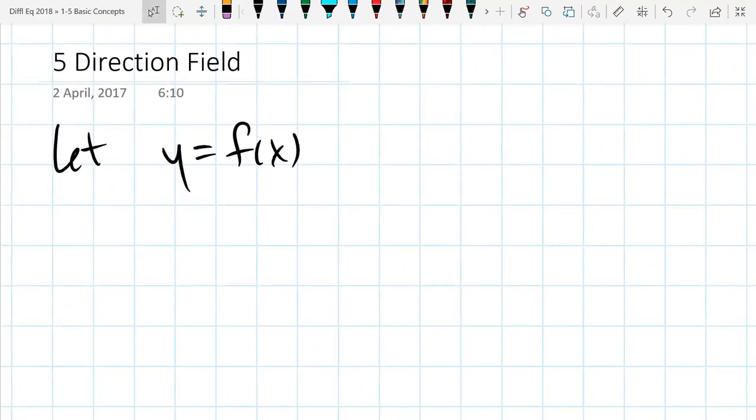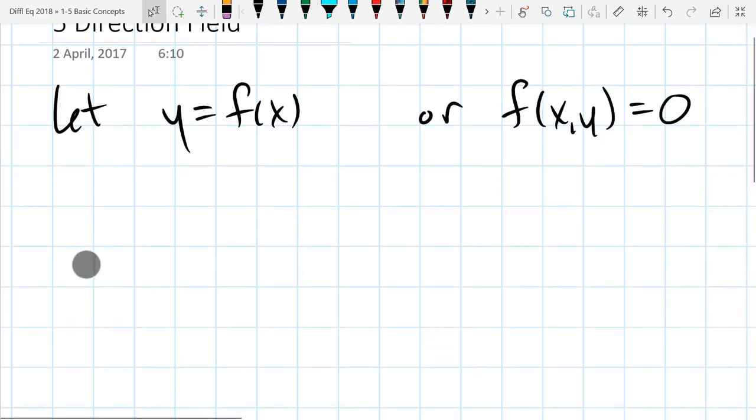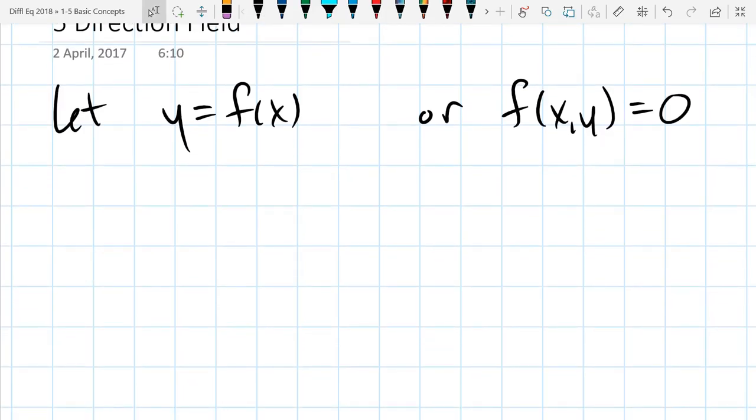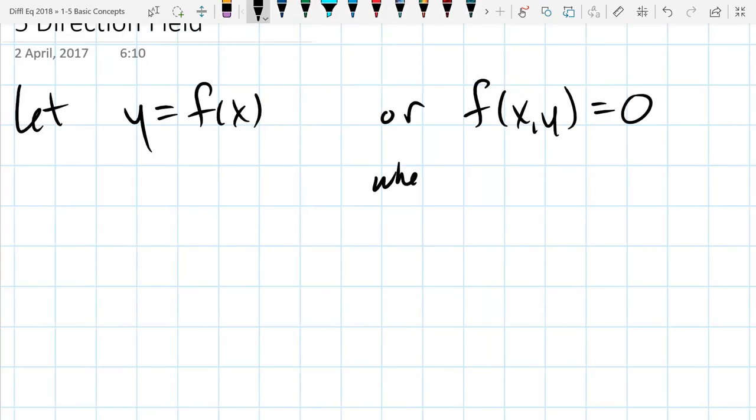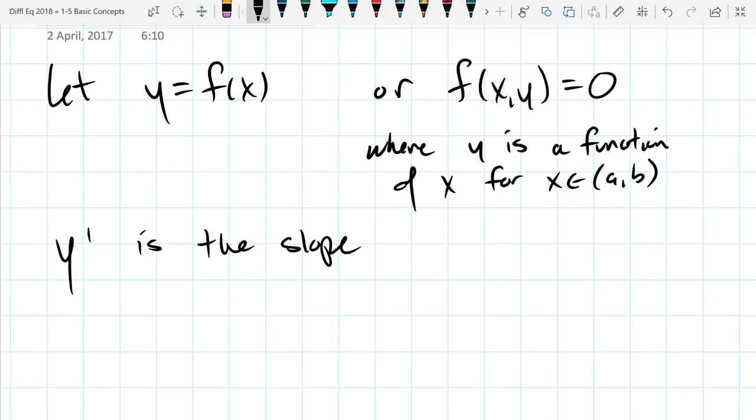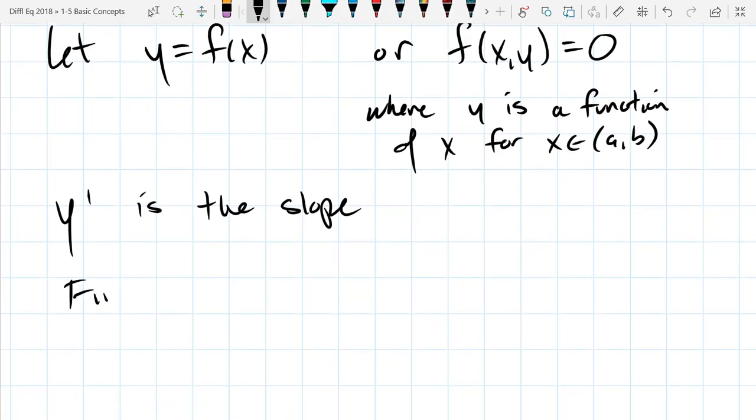I'm using graphing paper on purpose. We're going to start with the function y equals f of x, or you can have an implicit function f of x, y equals 0. If you have an implicit function, you do need to have a function of x for some x values. So if we have this implicit function where y is a function of x for x in some interval a to b, either way, y prime is the slope of the function. So it's the usual y prime.